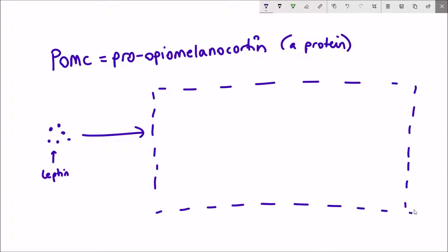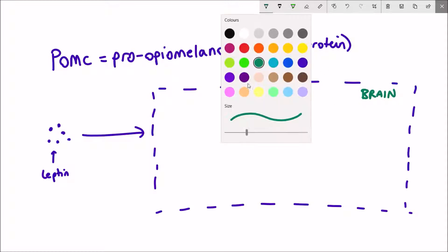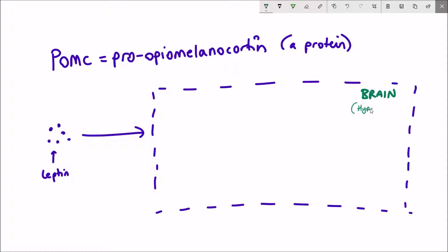POMC stands for pro-opioid melanocortin and it is upregulated in response to leptin. So when you've just eaten, leptin is secreted by adipose tissue and goes up to the brain and binds to its receptors. This upregulates the expression of POMC in POMC neurons, hence their name.